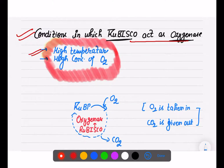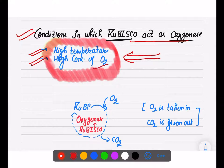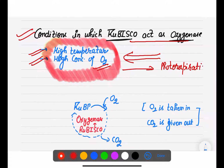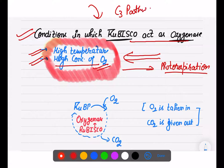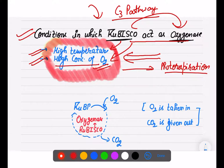The conditions in which RuBisCO acts as oxygenase are: high temperature and high concentration of oxygen. If plants are experiencing very high temperature and are dealing with high concentration of oxygen, they will show the photorespiration process. But if temperature is optimum and oxygen concentration is optimum, they will show the C3 pathway.